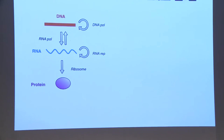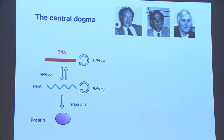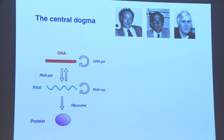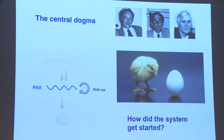For the second part of my talk, I'd like to get back to the central dogma. Another question that is immediately obvious is: how did the system get started? We need nucleic acids to make proteins and proteins to make nucleic acids. How do you boot up life? Over 40 years ago, Francis Crick, Leslie Orgel, and Carl Woese proposed what seemed at the time a pretty far-fetched idea.